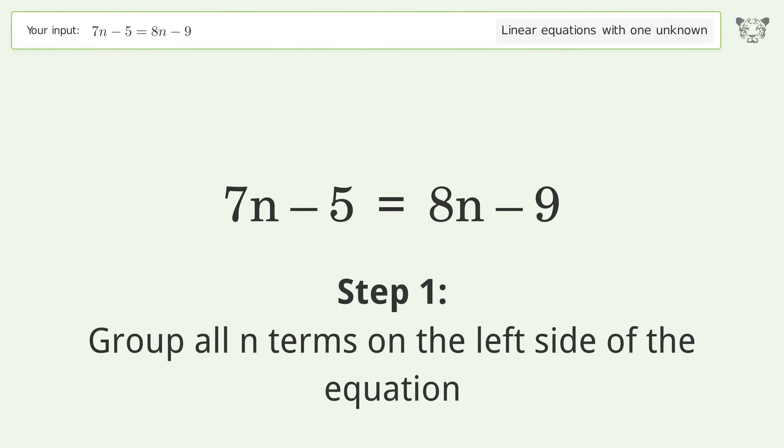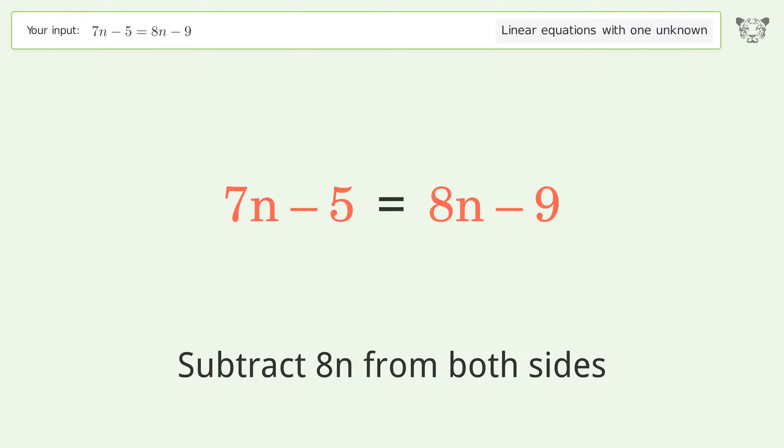Group all n terms on the left side of the equation. Subtract 8n from both sides.